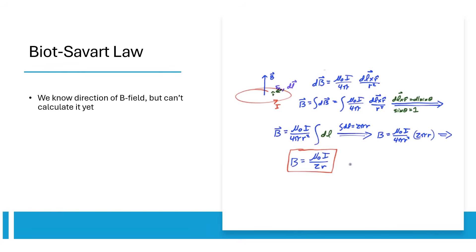We know B-fields form loops around wires, but how do you actually calculate them? One way is to use the Biot-Savart law, which shows that B-field is a function of current, length, distance from wire, and angle between current and distance from wire.